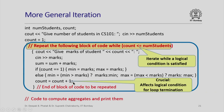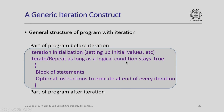The incrementing of the counter is now very important because it affects the logical condition for terminating the loop. In general, an iteration construct looks like this: there is a part of the program before iteration, then a part where you initialize values used in the iterative construct, then you iterate or repeat as long as a logical condition stays true — executing a block of statements with optional instructions at the end of every iteration. When the logical condition becomes false, you come out of the iteration construct and execute the remainder of the program.